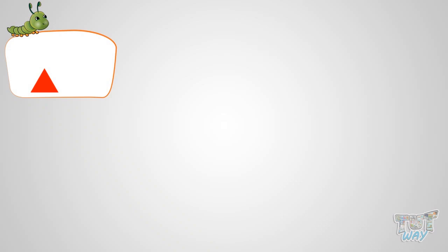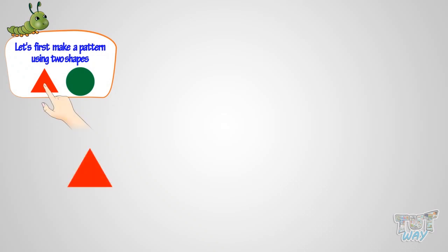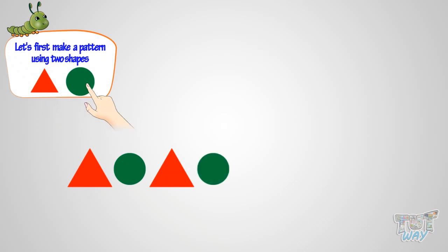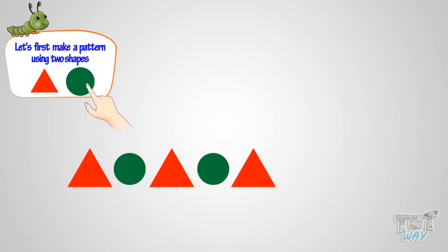Let's first make a pattern using two shapes — a triangle and a circle. I will make a triangle. Now a circle. Now a triangle. Now a circle again. Now a triangle. Now a circle again.